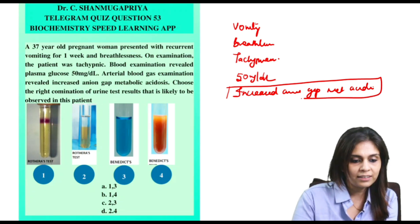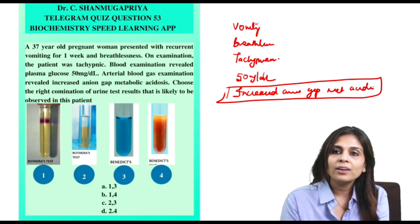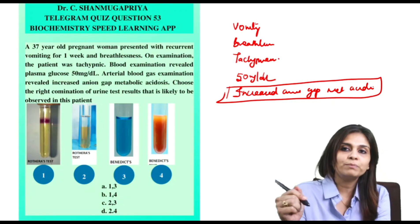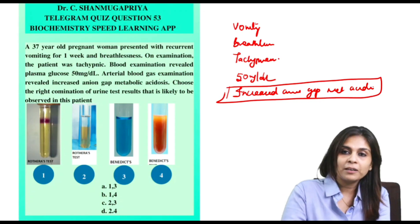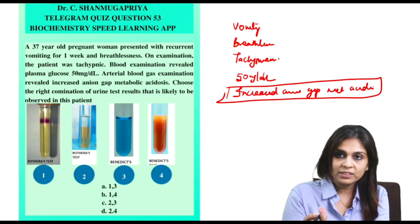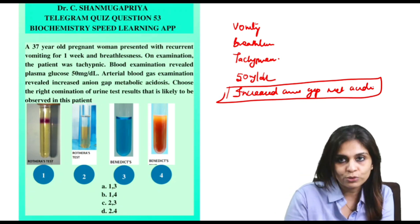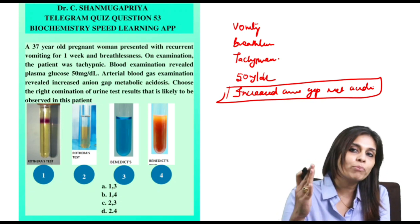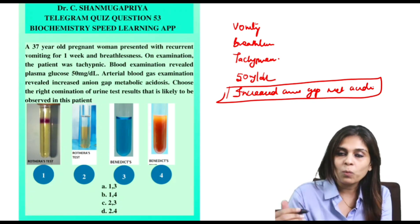Let me start the discussion with the last finding, which is increased anion gap metabolic acidosis. I have already made a video on anion gap and its clinical applications — the link is in the description box below. But to answer this question, all you need to know is: if you find a case of increased anion gap metabolic acidosis, it's a clue that it is caused by production of an abnormal acid.